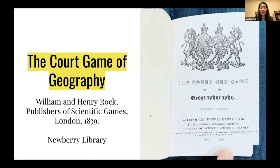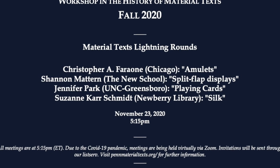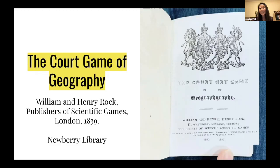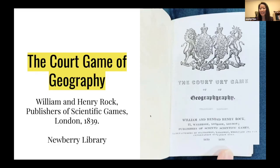This one is a fascinating set called The Court Game of Geography, printed in 1839 and held at the Newberry Library in Chicago. I have my wonderful co-panelist Suzanne to thank for introducing me to this deck when I was at the Newberry last year. Just from this title page of the instructional booklet alone, this deck of playing cards rests at the intersection of games and science — an intersection I've been interested in exploring — as well as questions about race and empire, as we'll see shortly.